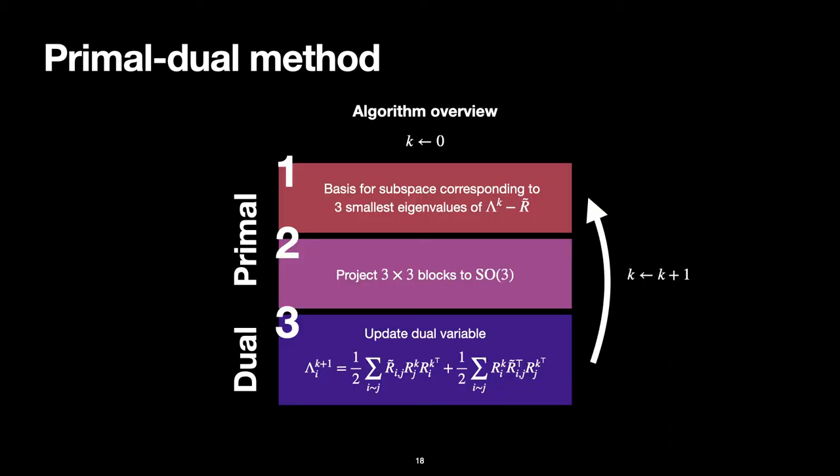Overall, given a certain dual estimate, we compute the subspace corresponding to the three smallest eigenvalues of λ minus R̃ and project the blocks to the space of rotations to have a primal estimate. Then we update the dual variable according to this closed-form expression. As we will see later, this allows for very fast convergence to the global optimum for moderate noise levels.